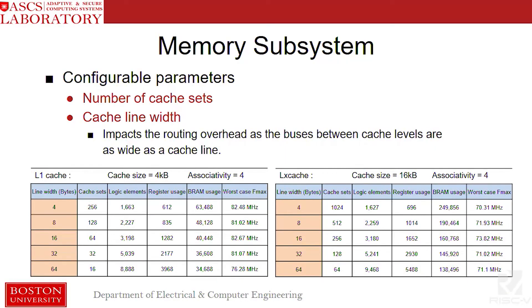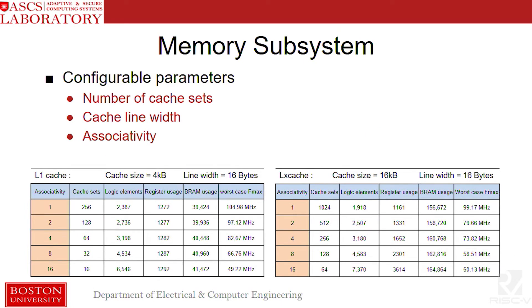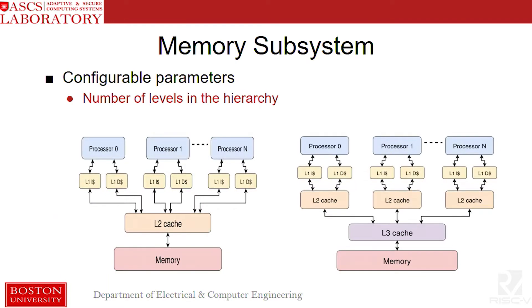All of these features can be easily changed by a user. They're built with a number of user-configurable parameters. Caches take up a significant portion of your area and power budget, so it's useful to have tunable parameters so you can make your cache system fit your requirements as closely as possible. A user can start with basic parameters like number of cache sets, cache line width, then change the associative width of the caches. Some synthesis results show that the parameterization works without any issues, and you can also change the number of levels in your cache hierarchy.